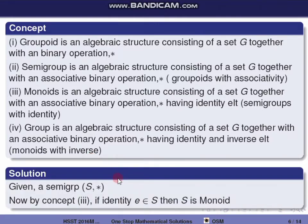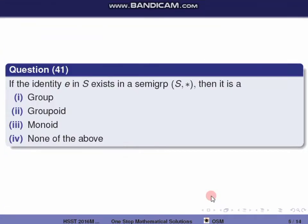The question asks: the semigroup (S, *) with identity is what structure? Since (S, *) is a semigroup and identity e exists, (S, *) is a Monoid. The correct option is option 3: Monoid.